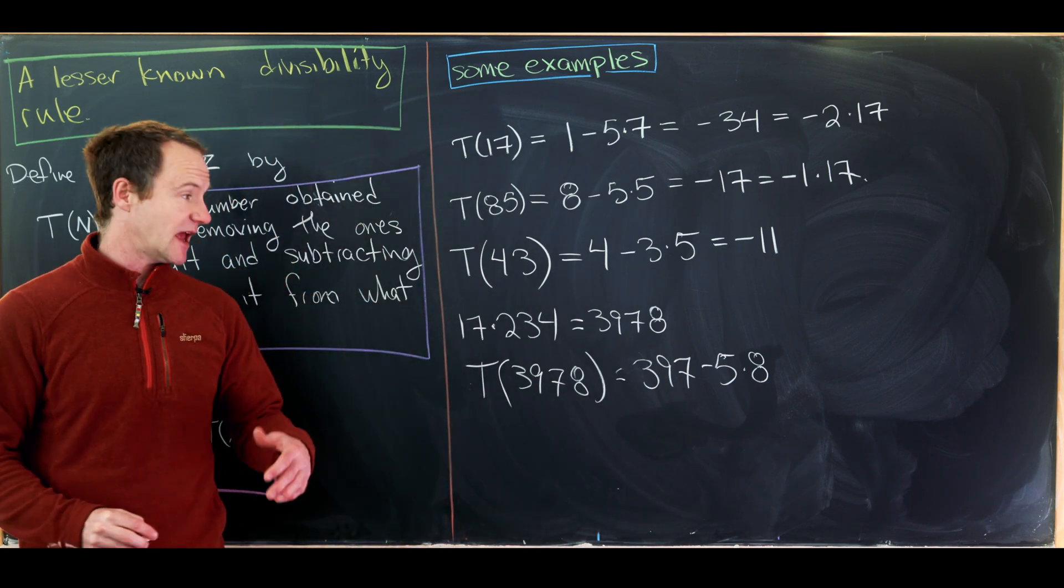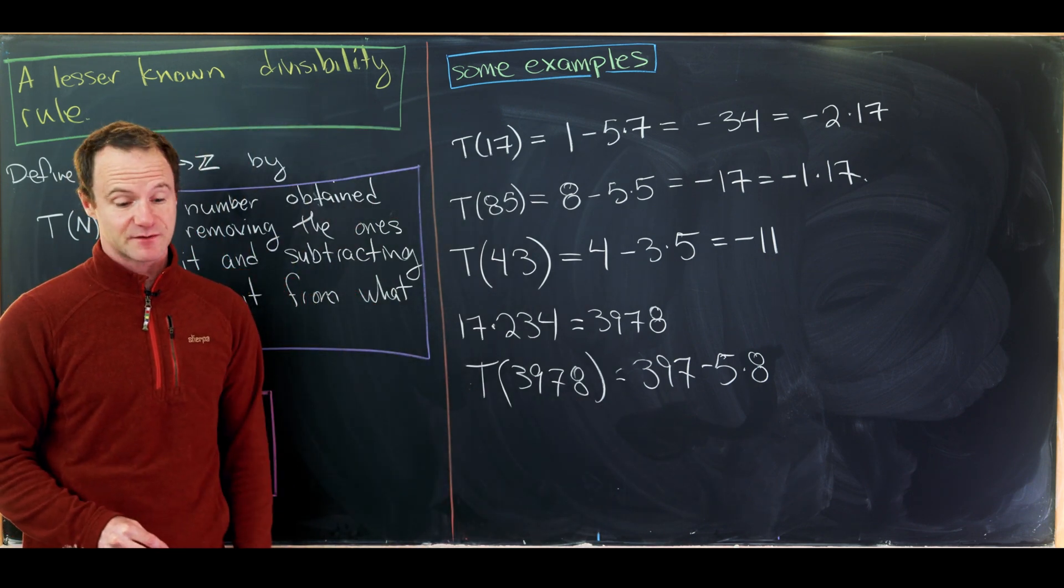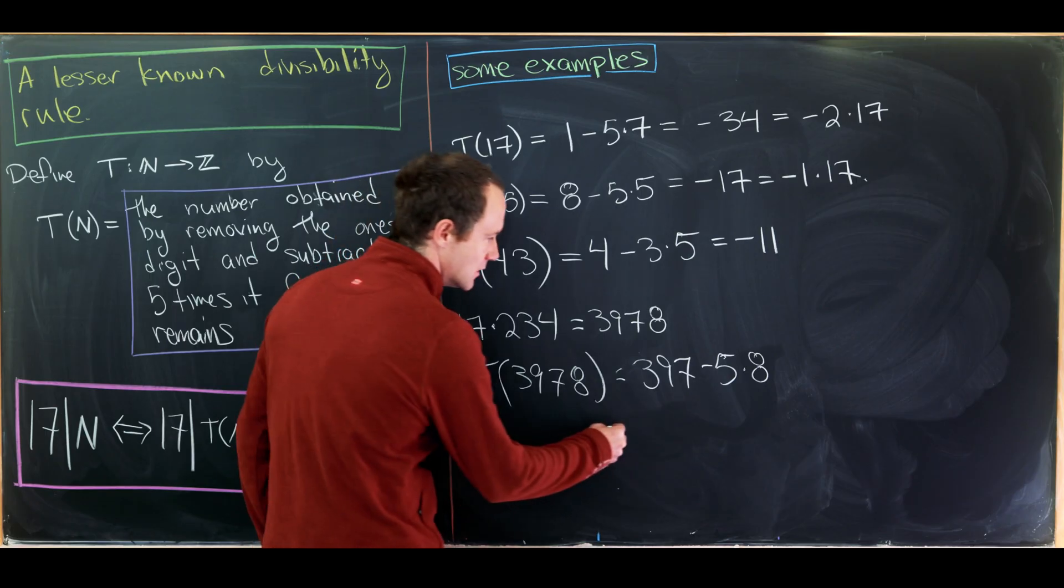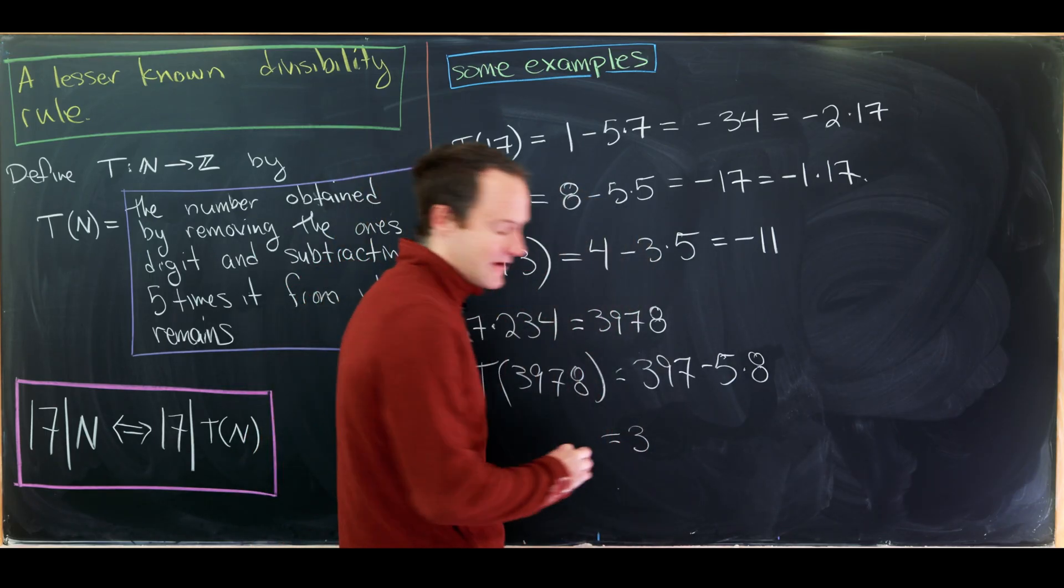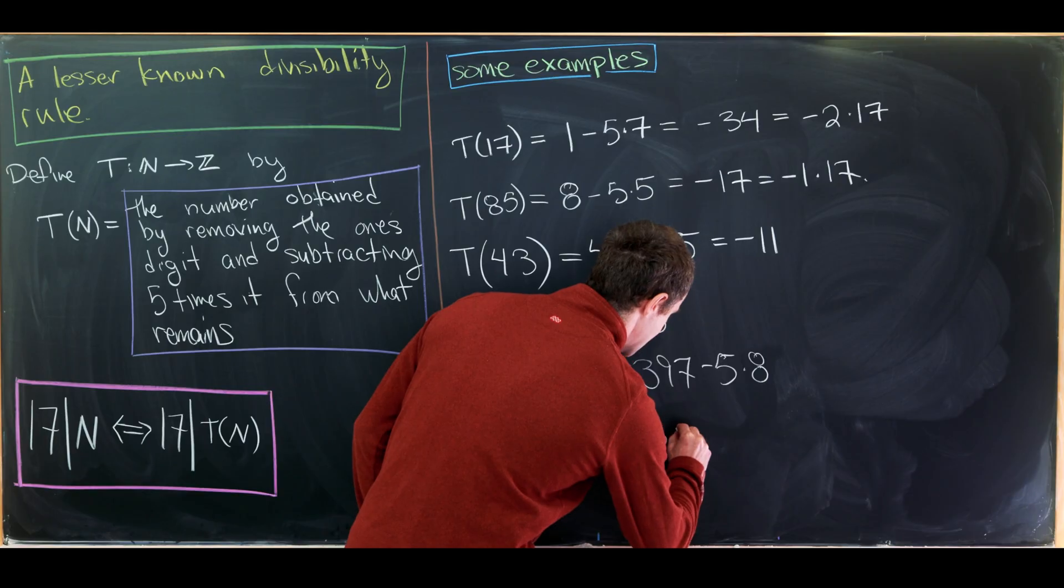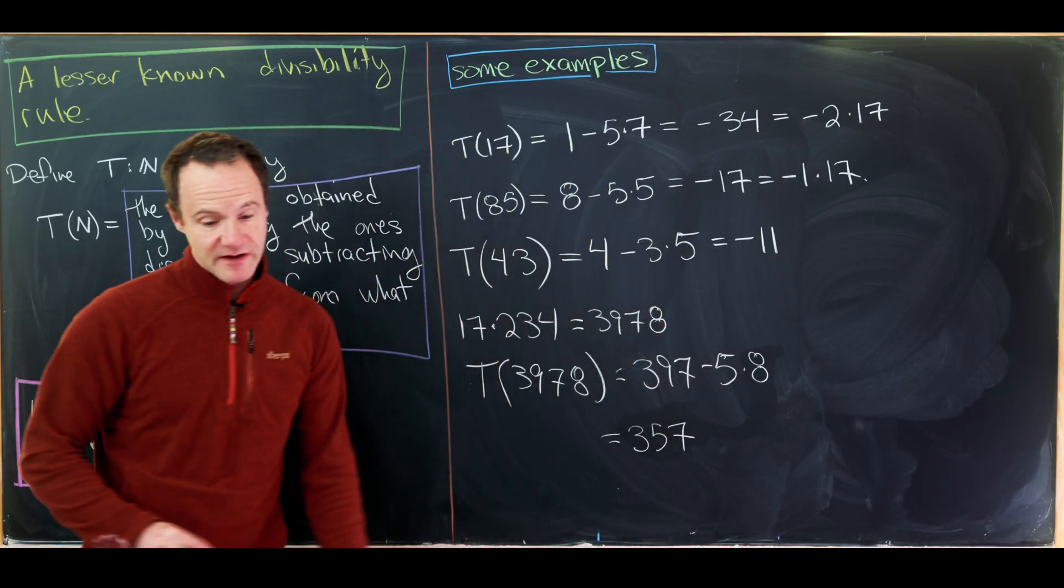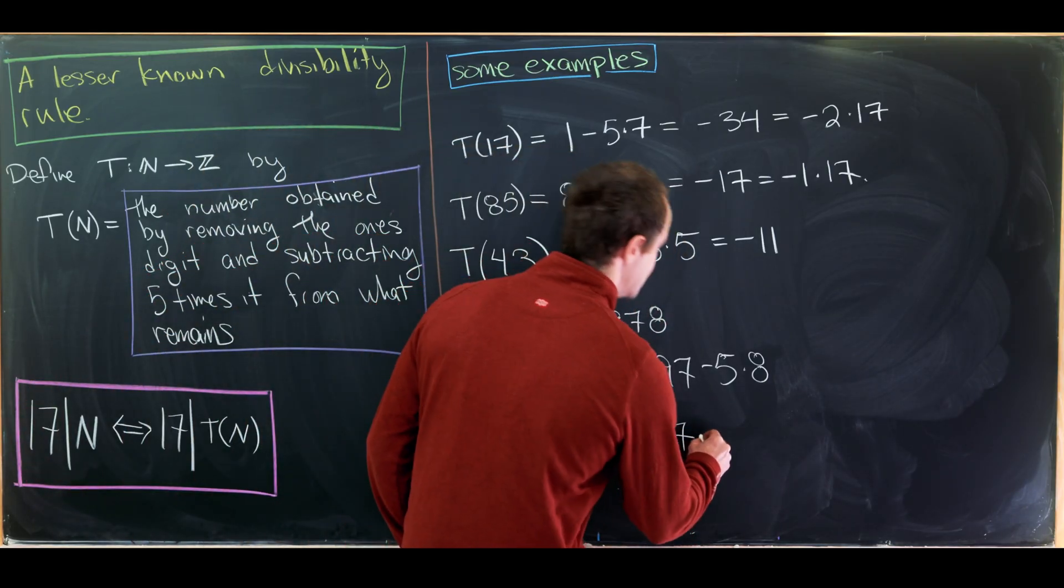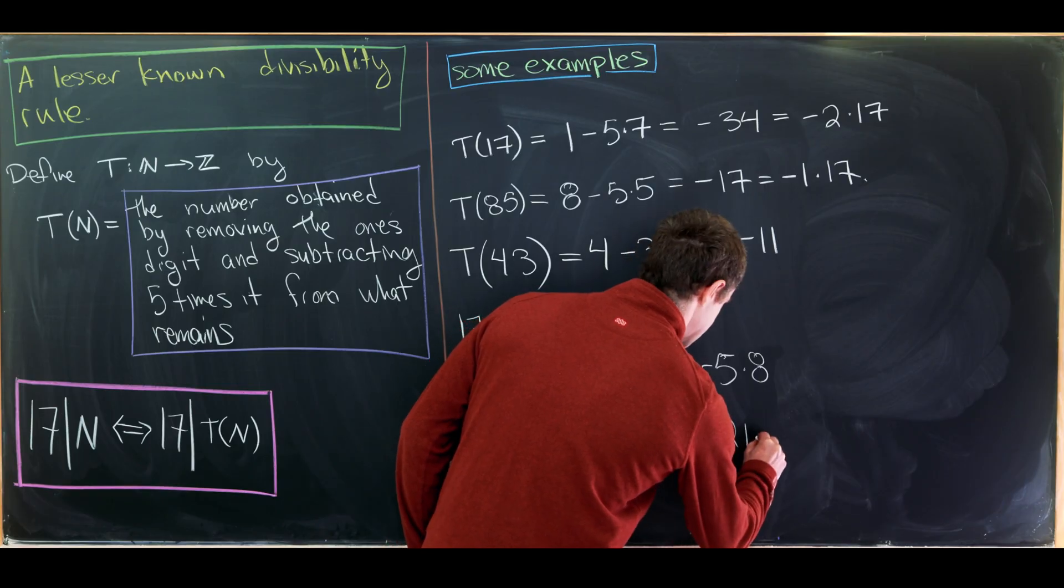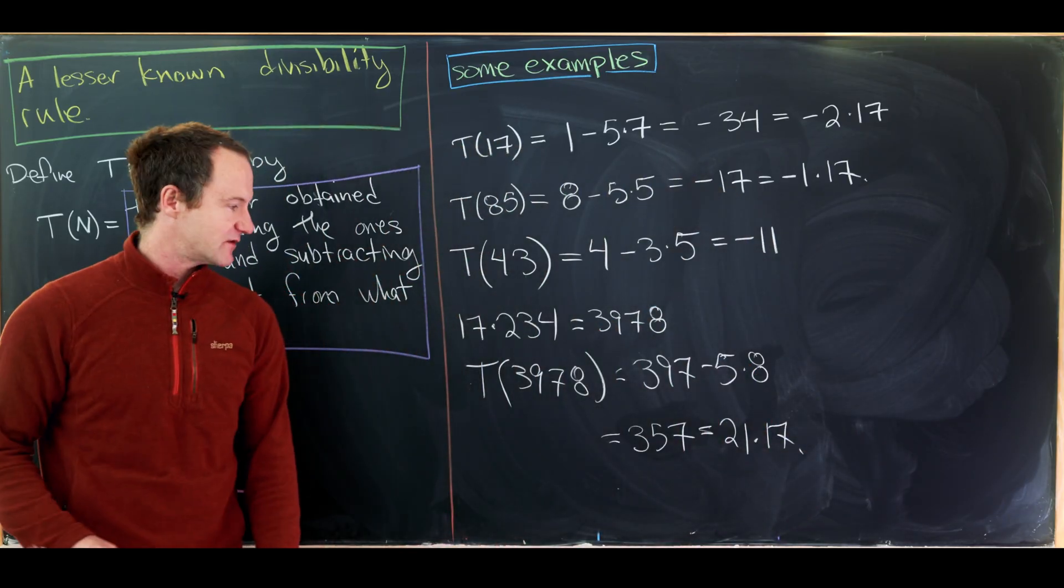So T(3978) will be 397 minus 5 times 8. So remove the ones digit and then subtract 5 times it from what's left. So this gives us 357, given that 5 times 8 is 40. But 357 can be checked to be 21 times 17. So we got another multiple of 17.